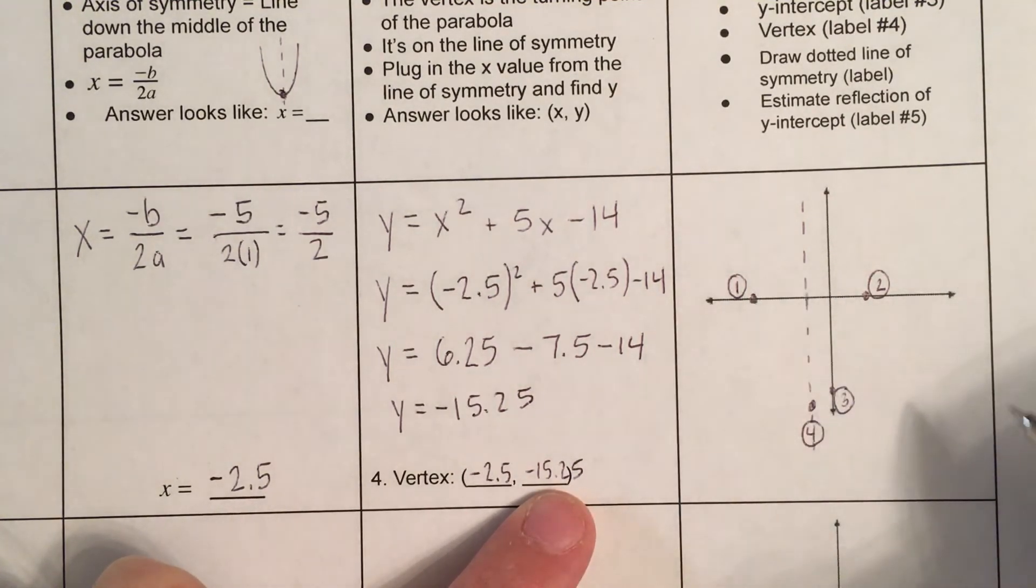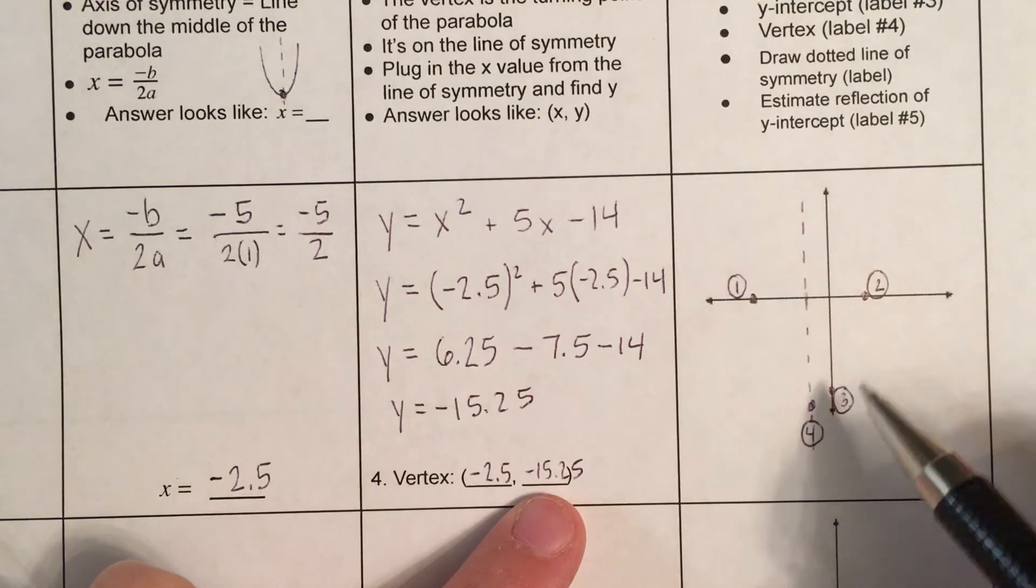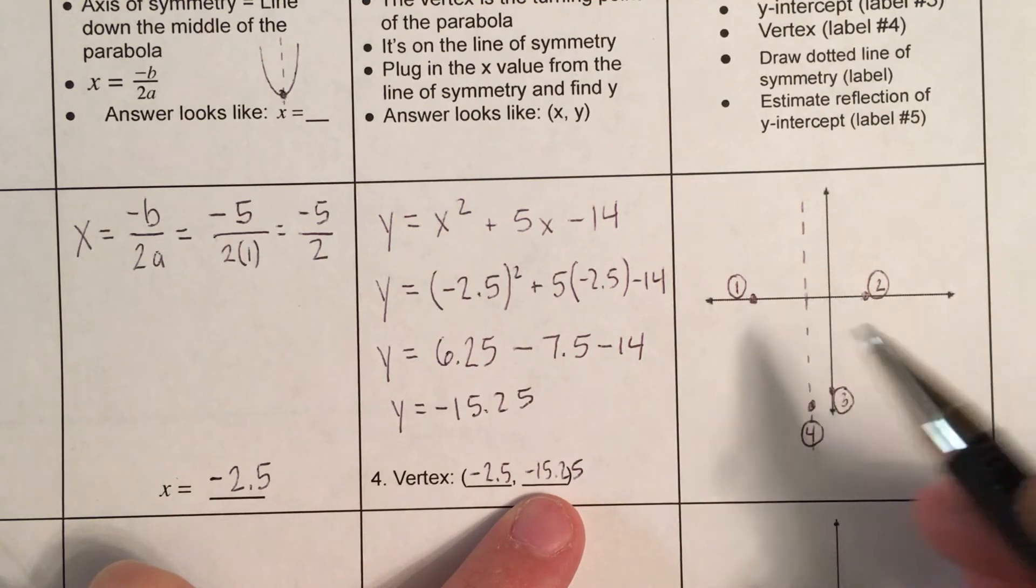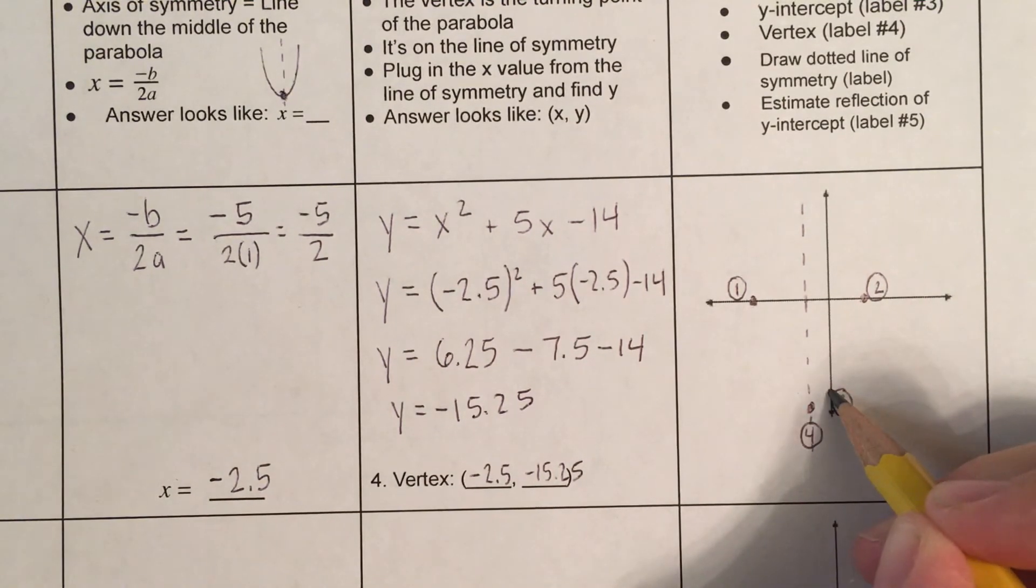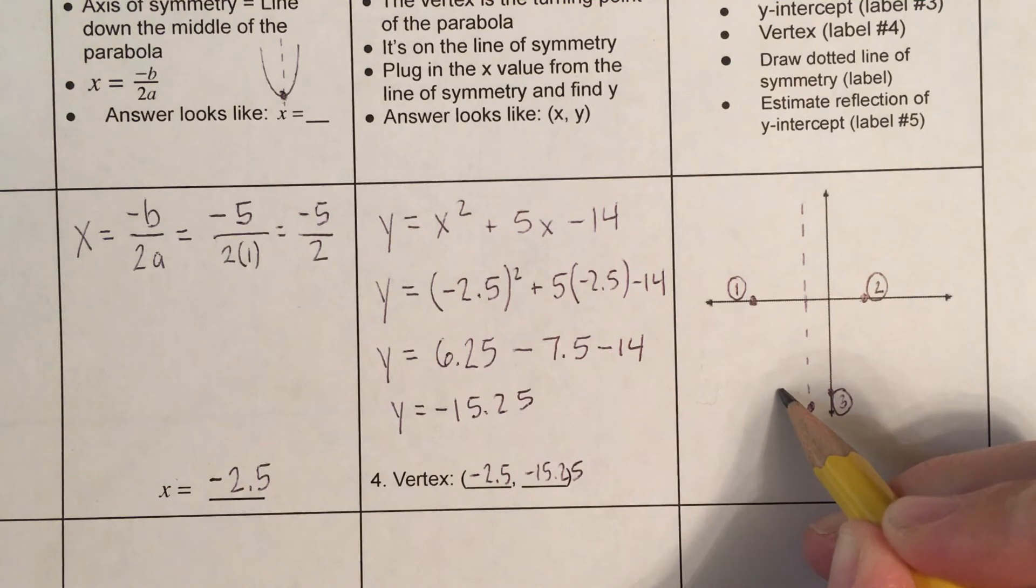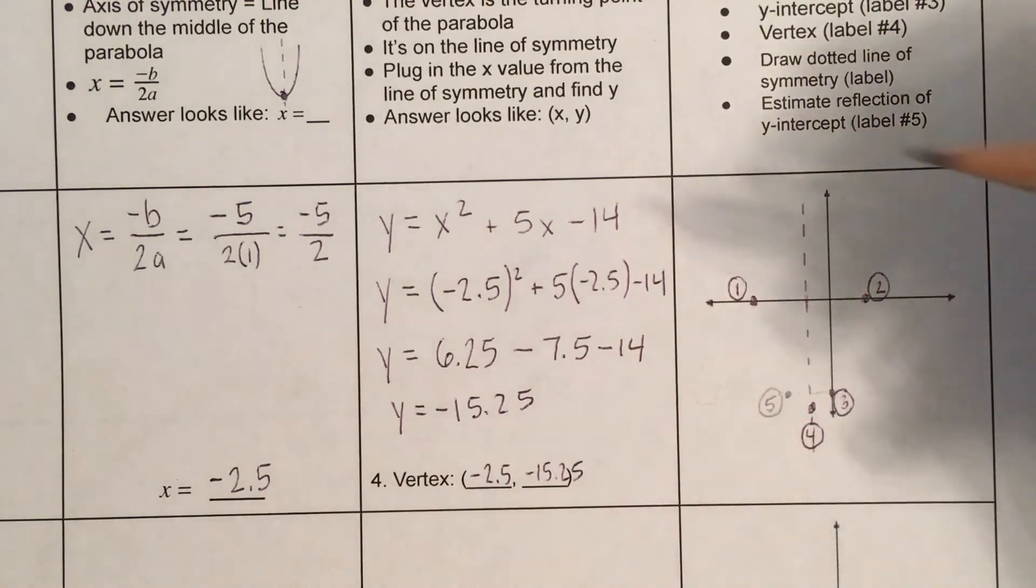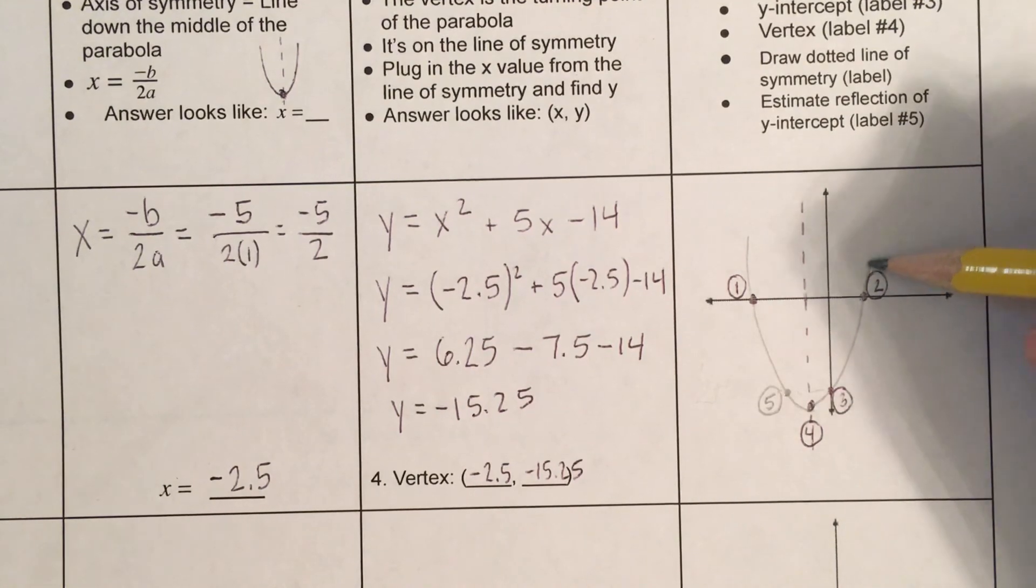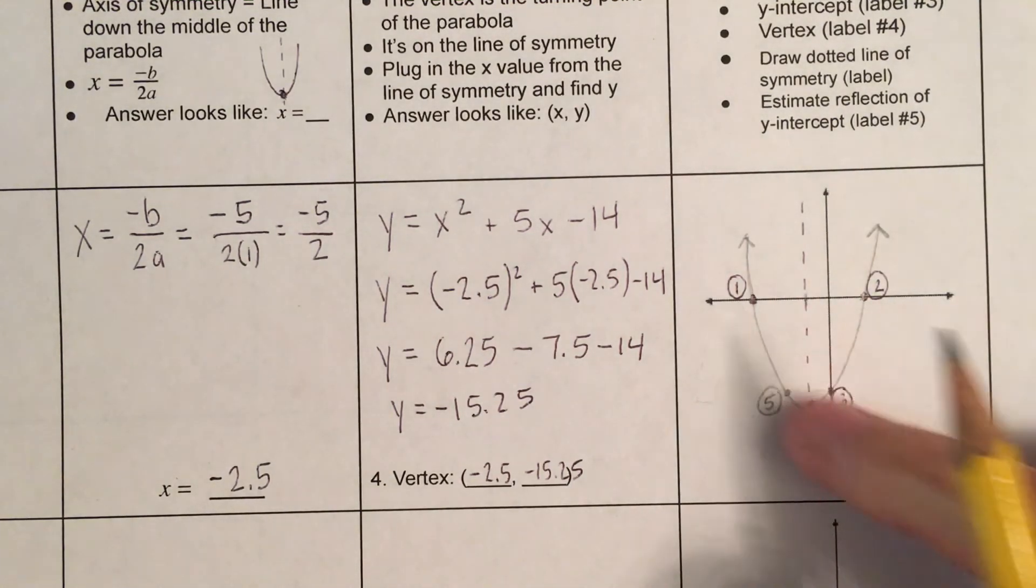And then the last thing we can do to make our graph as neat as possible is we can estimate the reflection of this point. Remember? So, remember that the parabola is symmetrical. So, it's going to be the same on both sides. So, we can see, like, these points are the same on both sides of the line. What we can do is we can take this point, the y-intercept, and we can just kind of eyeball where it will be before we draw our graph to make it a little neater. So, like, I see it's this far. I'm going to make it about right there will be on my line. So, we'll call that 0.5. And then I'm going to go ahead and sketch my graph. And you can see, because I've added more information, my graph is a little bit neater than it was yesterday.